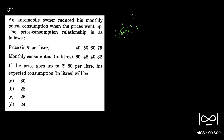Monthly consumption in litres multiplied by price gives the total amount he spends on petrol. So 60 into 40 is 2,400 rupees. When the price of petrol is 40, he consumes 60 litres. And when the petrol price went to 60, he consumes 40 litres — so 60 into 40 is still 2,400. You can check the others too: 48 into 50 — 48 into 50 is also 2,400. So he is spending 2,400 rupees as a constant amount.